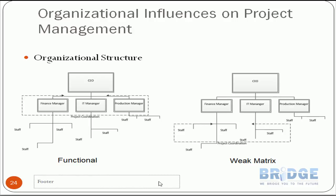Let's start with the first organizational structure, called the functional organizational structure. In this structure, we have the CEO — the chief executive officer or the operations manager — on top of the organization, with different departments or functional sections, each headed by its own functional manager who has staff reporting to him.